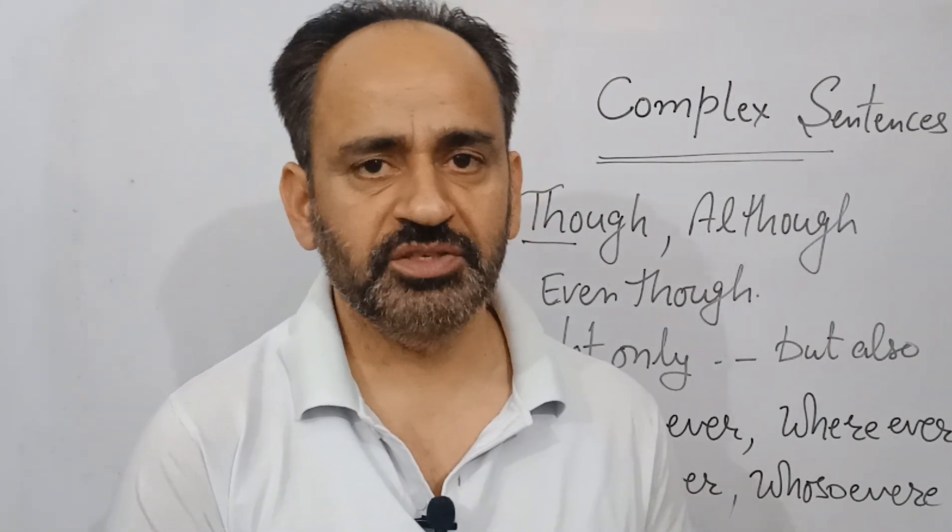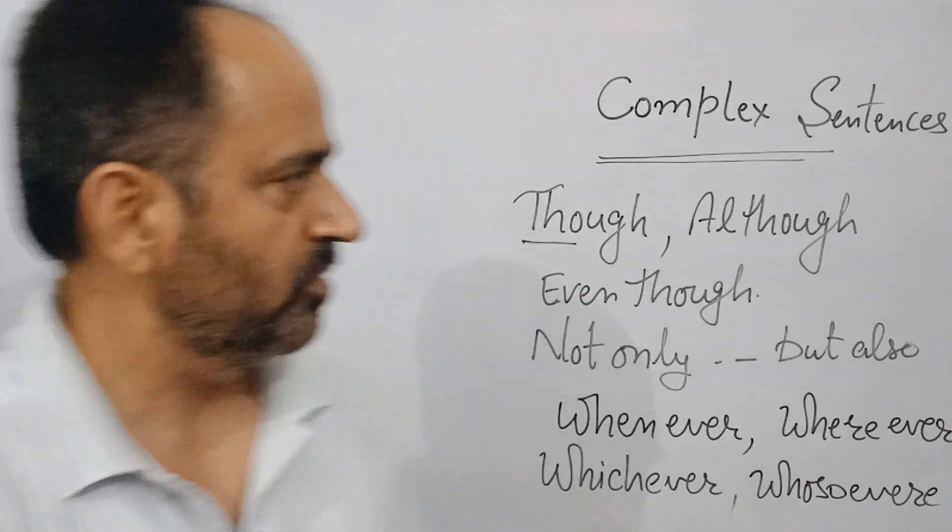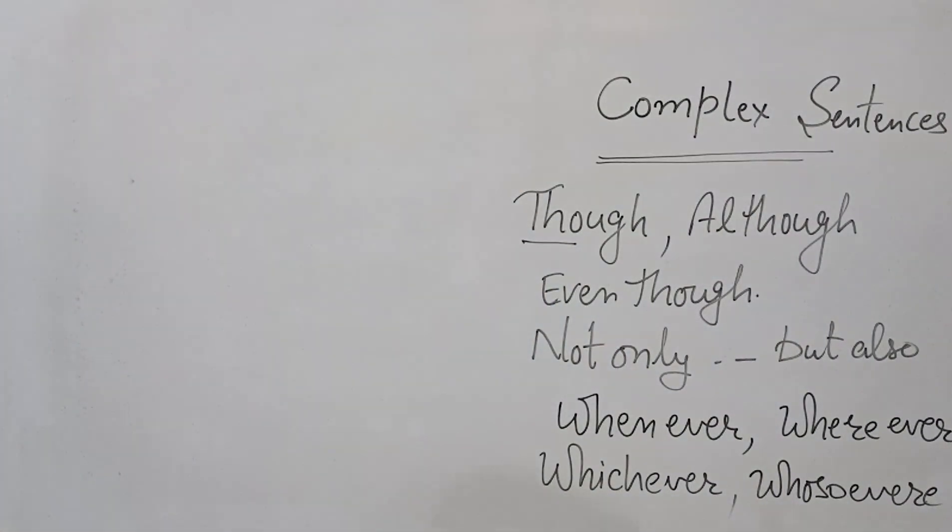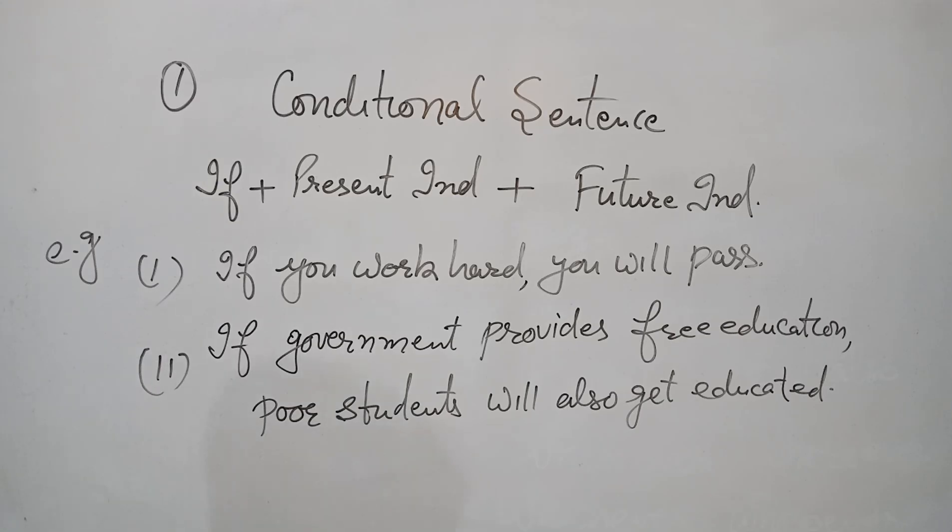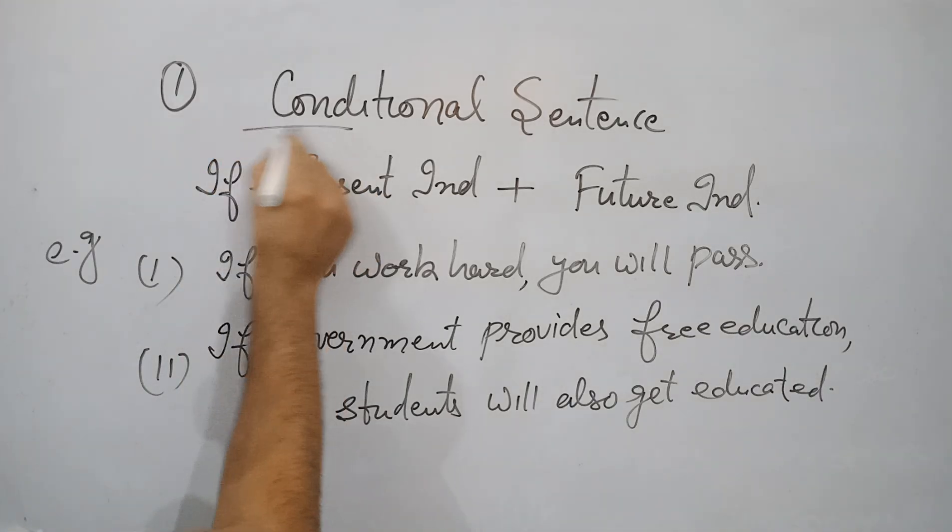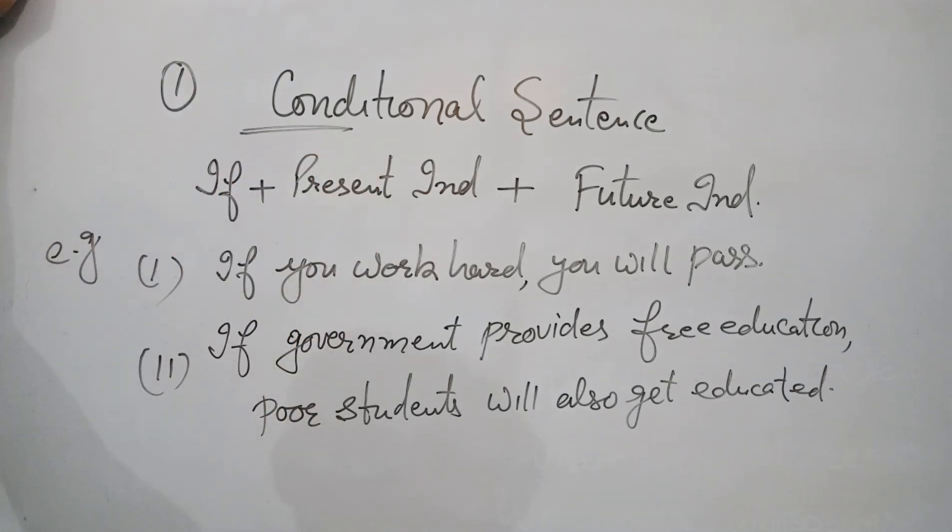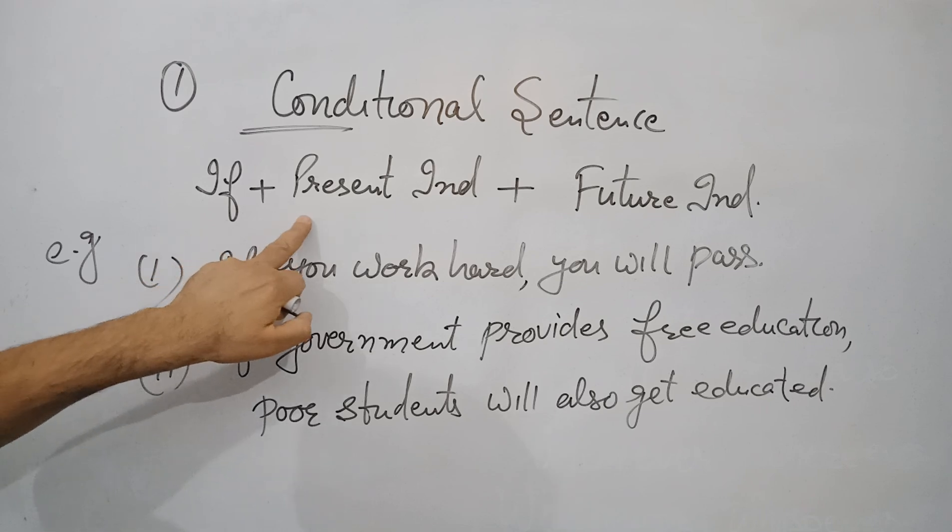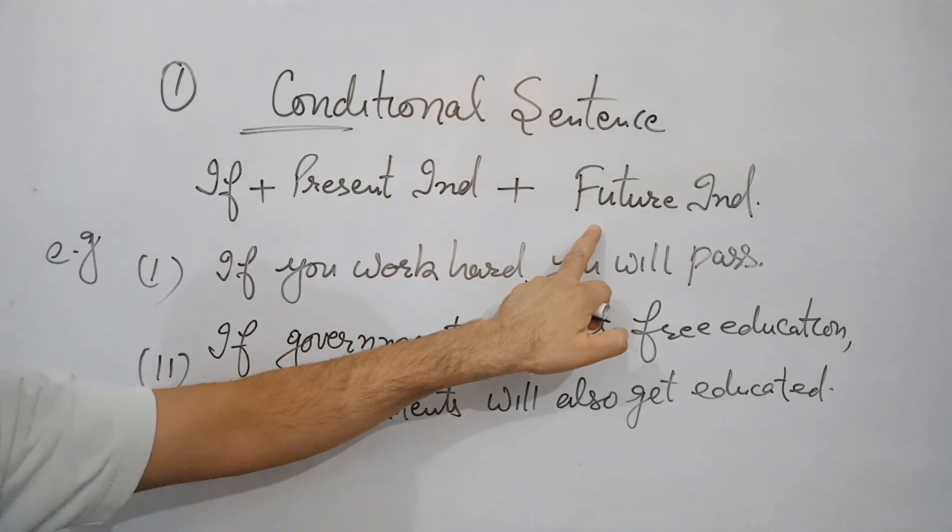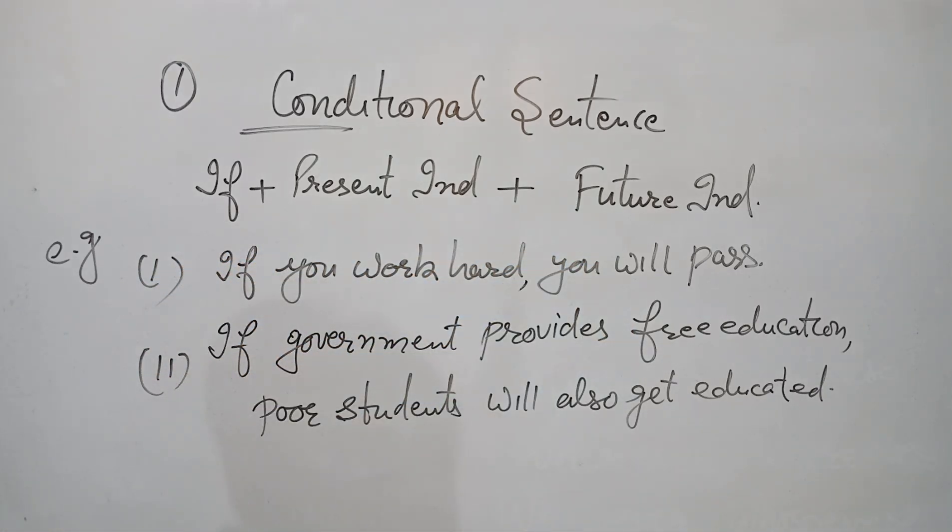Without wasting time, the things are in front of you. The first example is of conditional sentences. In conditional sentences, if-then structure, the first part is present indefinite and the second part is future indefinite. How can we understand that? If you have to do the work, then you will pass.